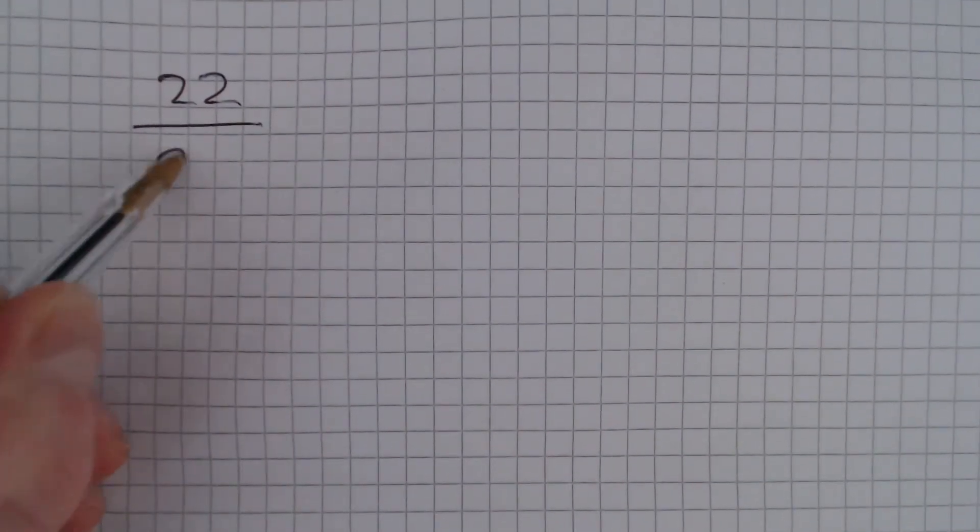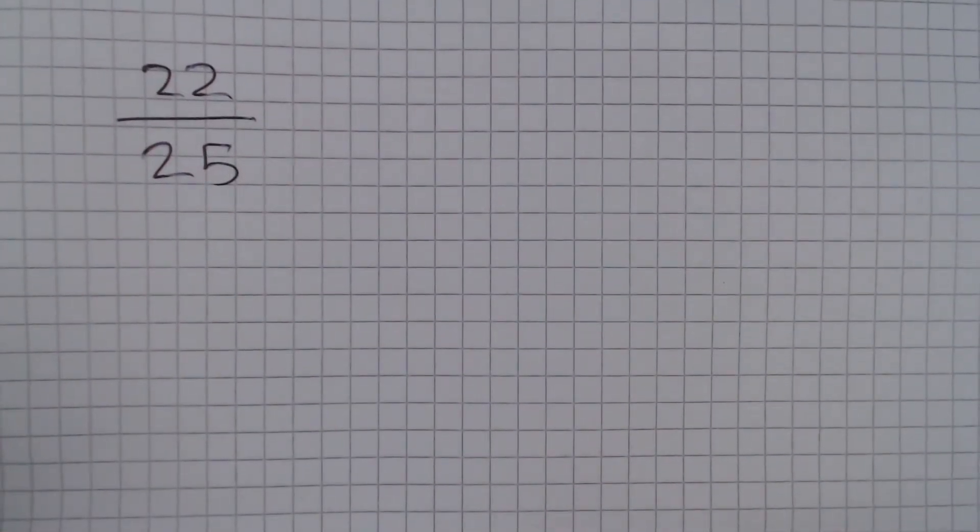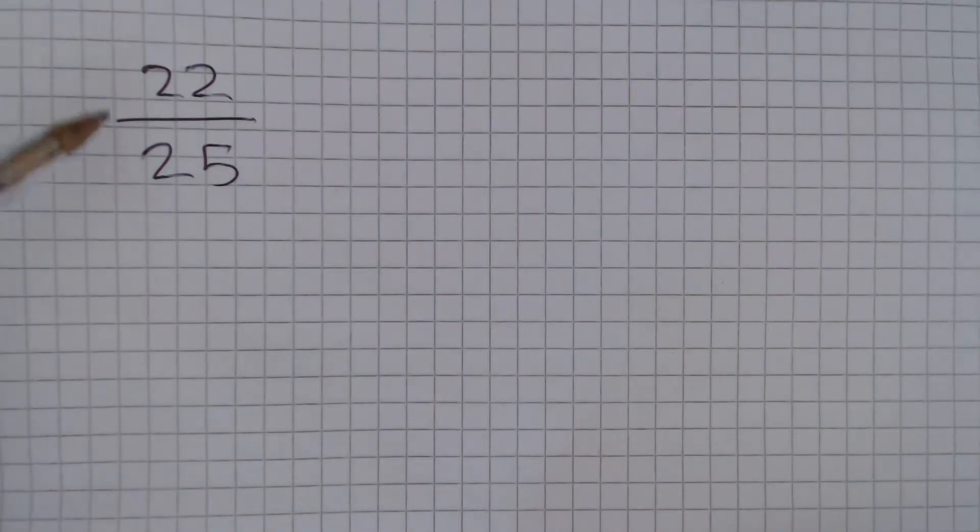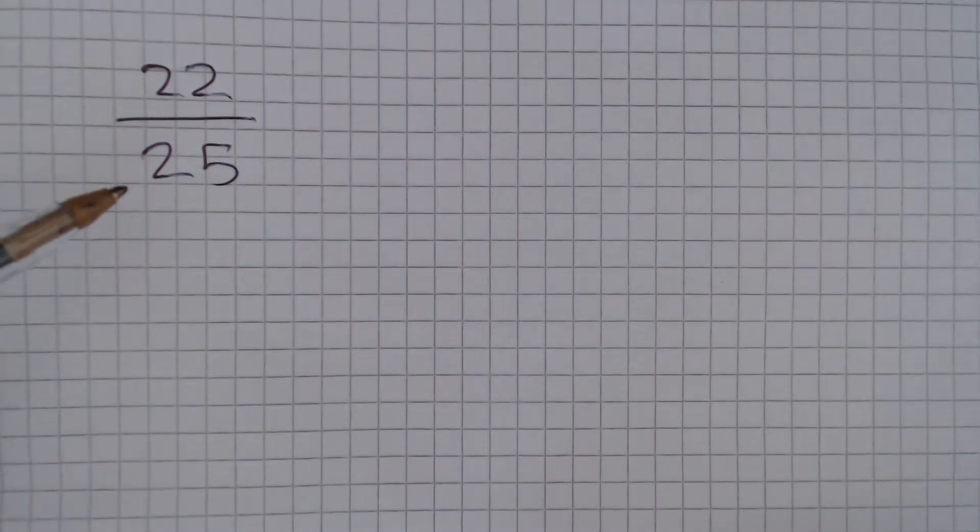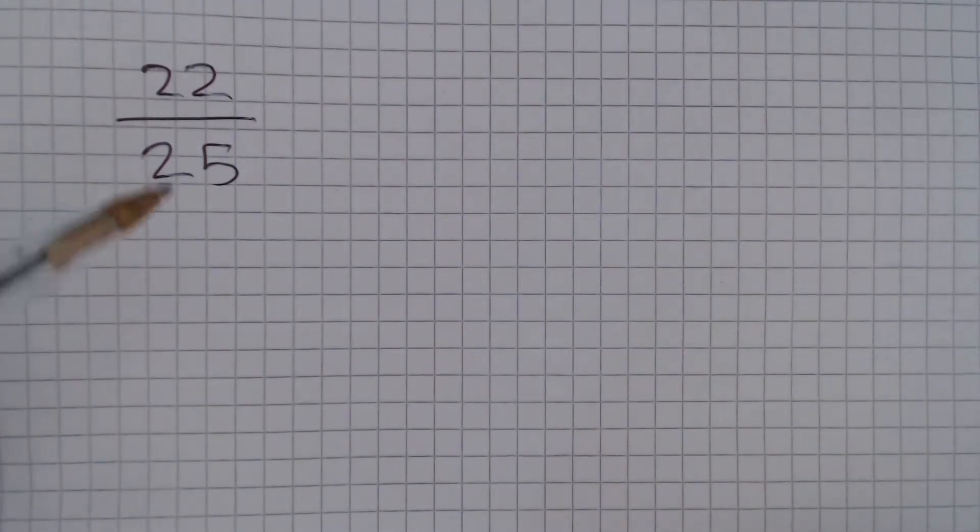So we have 22 out of a total of 25. So what we could do is do 22 divided by 25 and multiply our answer by 100. But there is a quick way here.